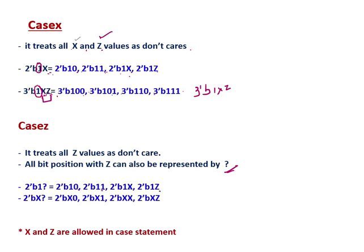So 2v1? is equivalent to 2v10, because the leading 1 is fixed. The question mark position can be 0, 1, x, or z — giving 2v10, 2v11, 2v1x, or 2v1z.